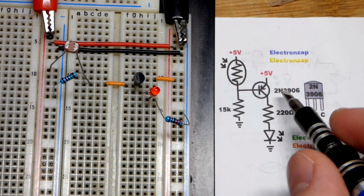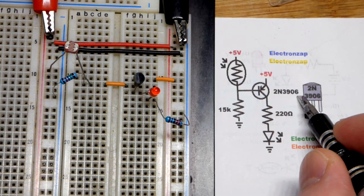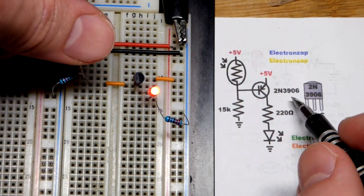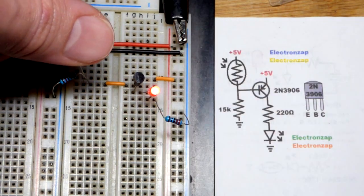In this video we're going to look at the PNP bipolar junction transistor 2N3906. We have it wired so the transistor turns on, and thus the load, the LED, turns on when it gets dark enough.